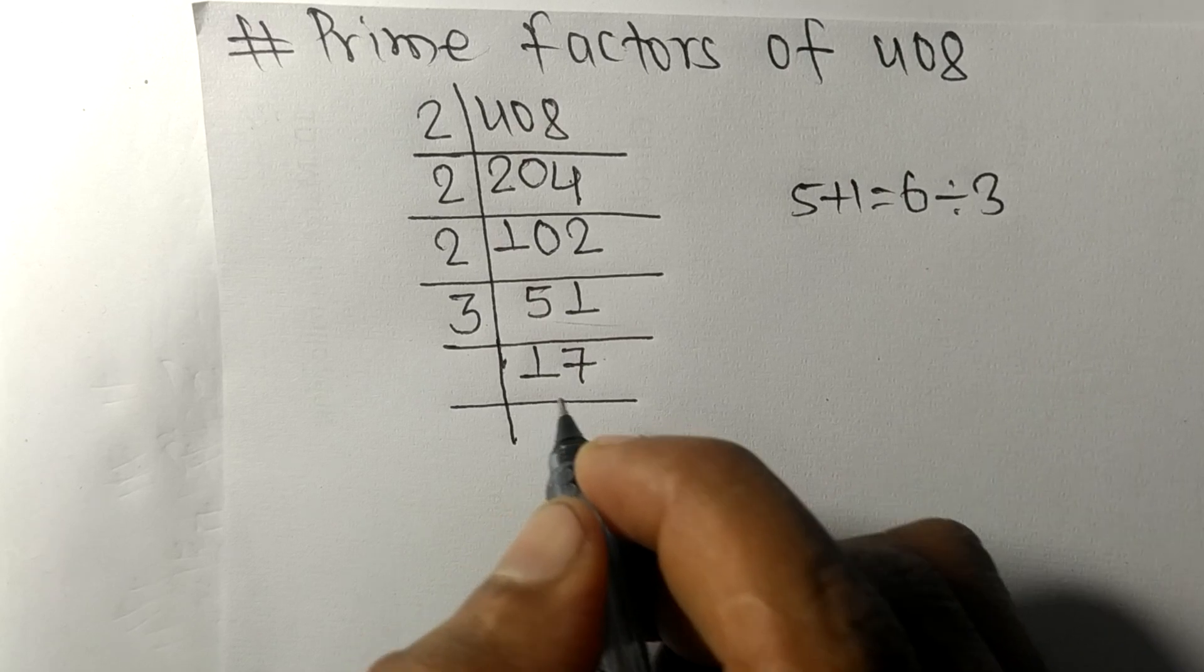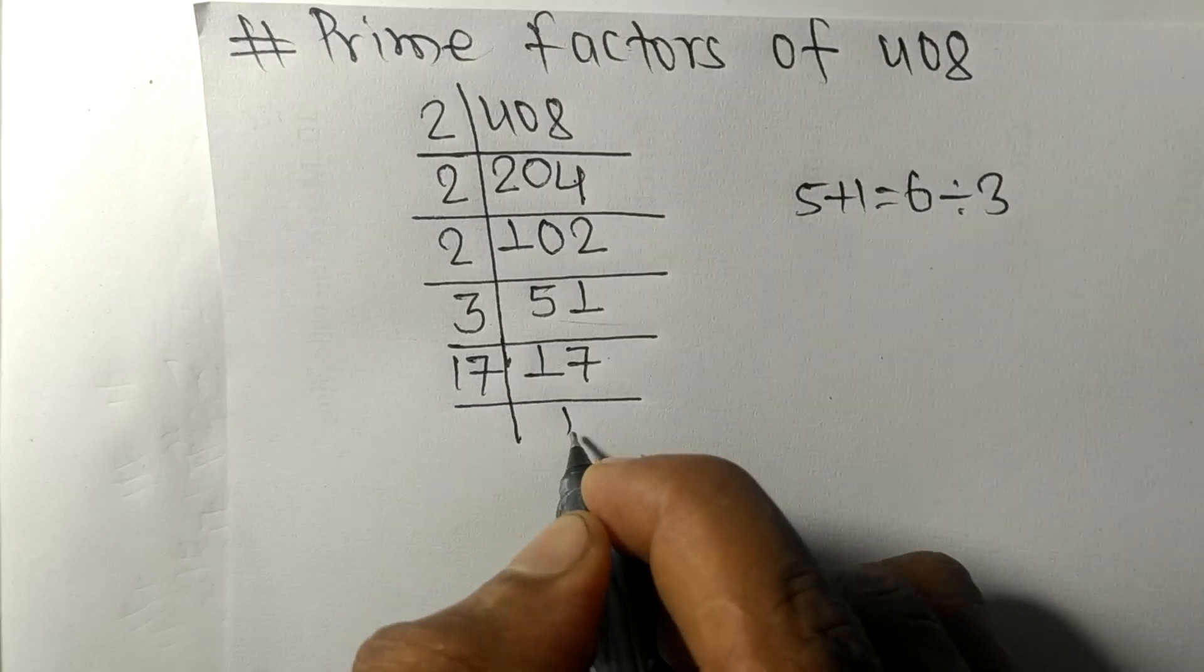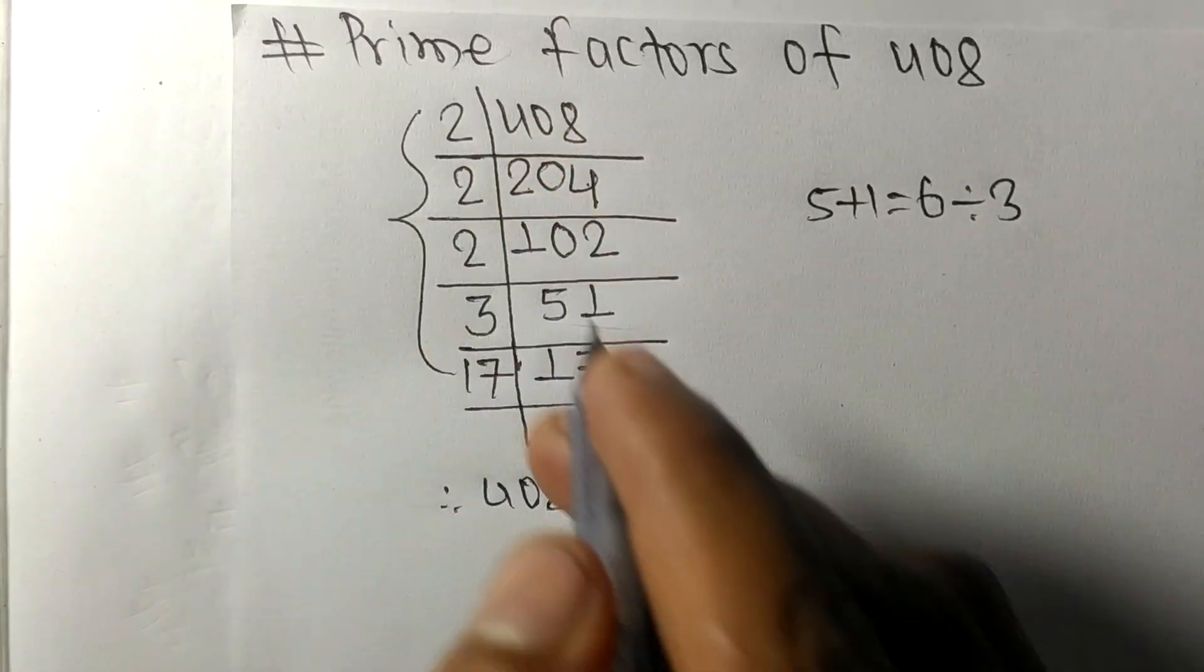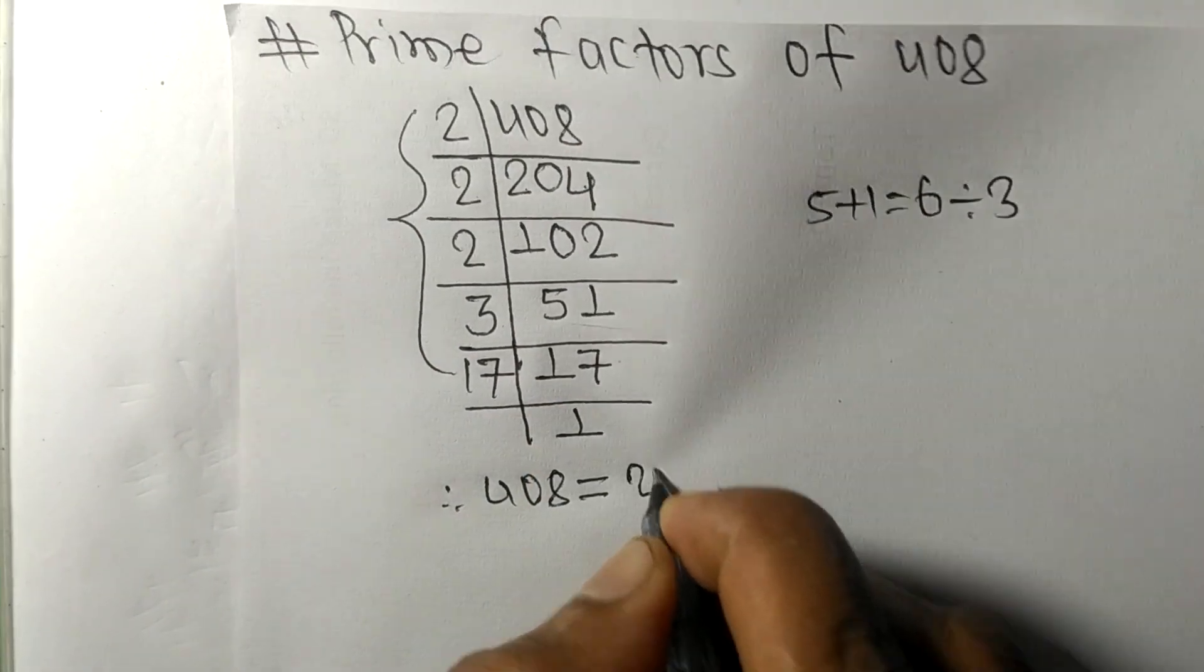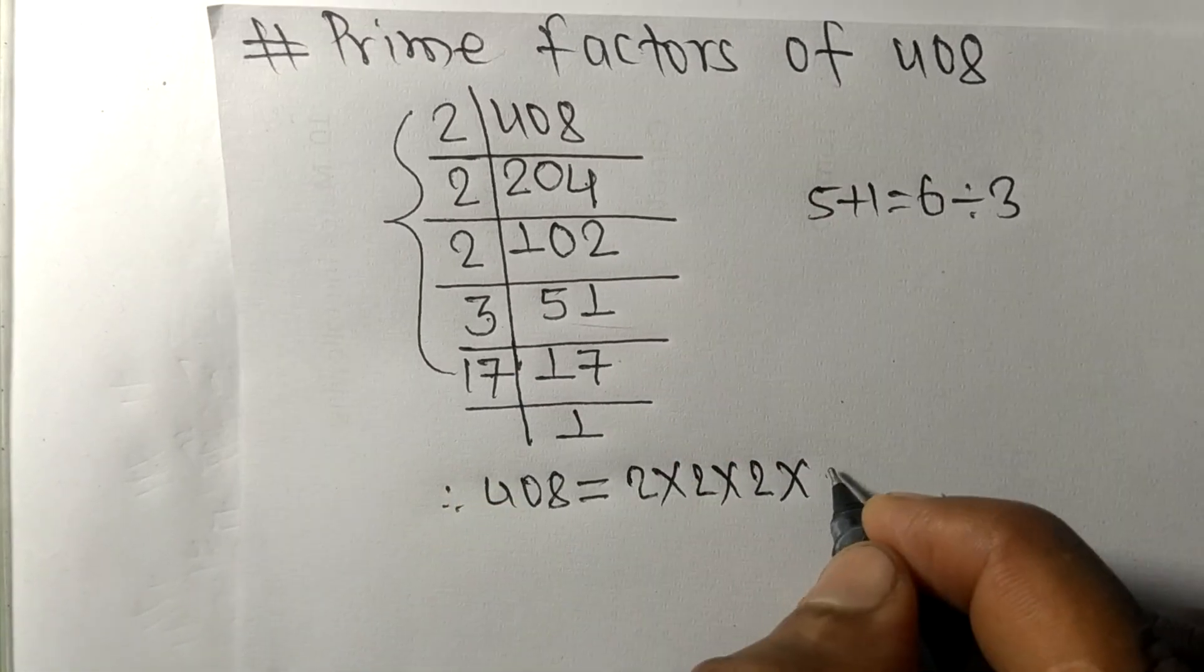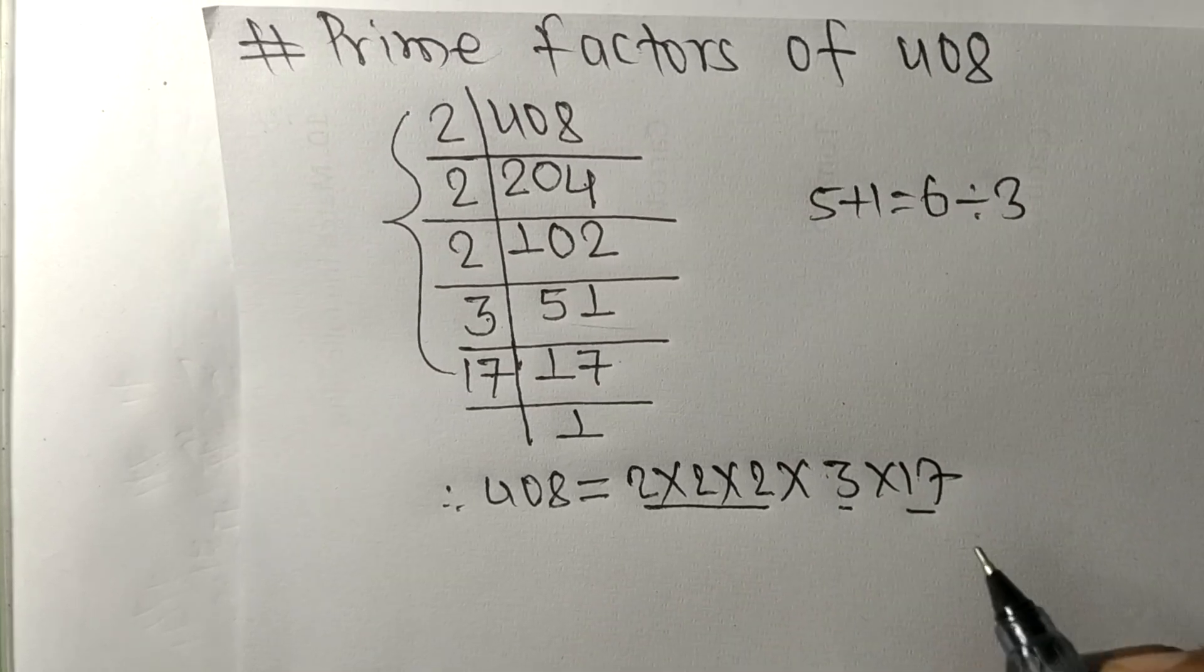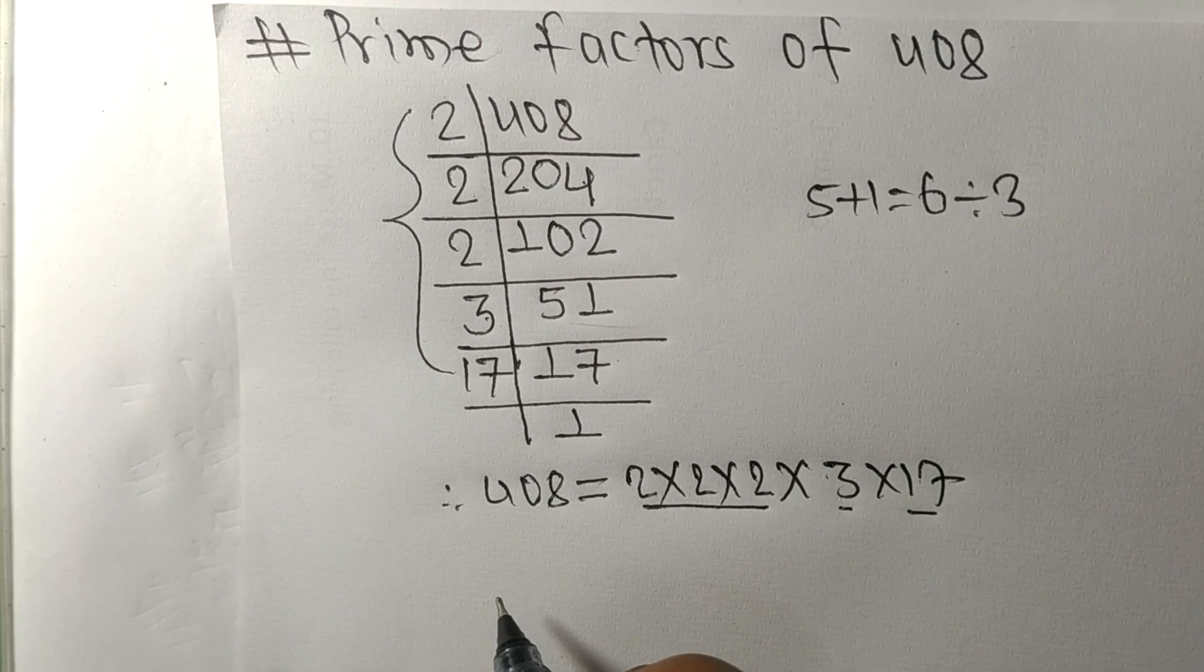Therefore 408 is equal to from this side it has 1, 2, 3 times 2, so 2 times 2 times 2 times 3 times 17. So 2, 3, and 17 are the prime factors of 408.